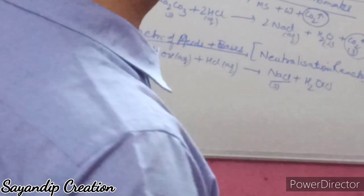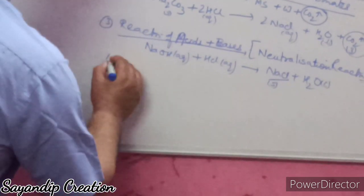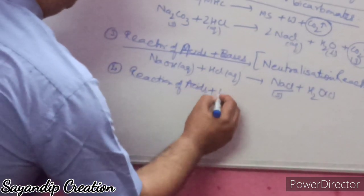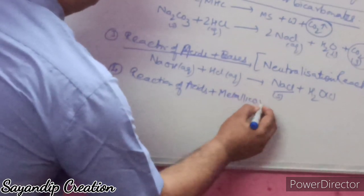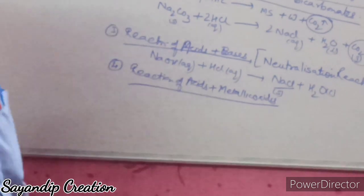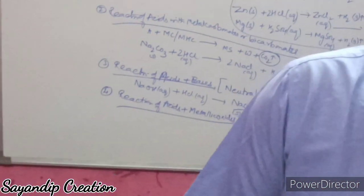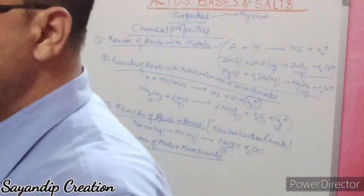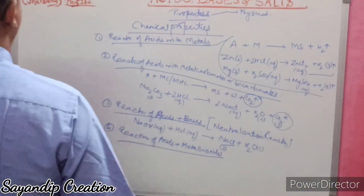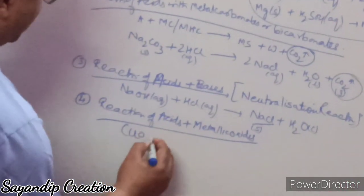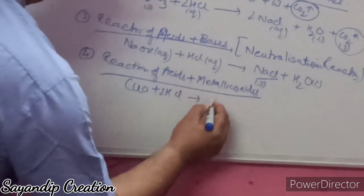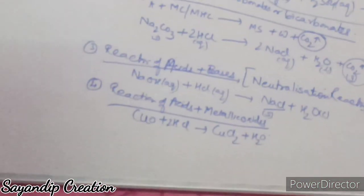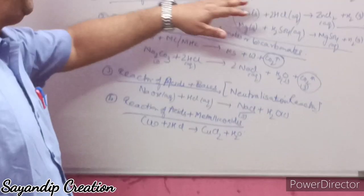The fourth chemical property is the reaction of acids with metallic oxides. Metallic oxides are generally basic in nature, and are known as basic oxides — they turn red litmus to blue. For example: CuO + HCl → CuCl2 + H2O. So acids react with metallic oxides to form a metal salt and water.